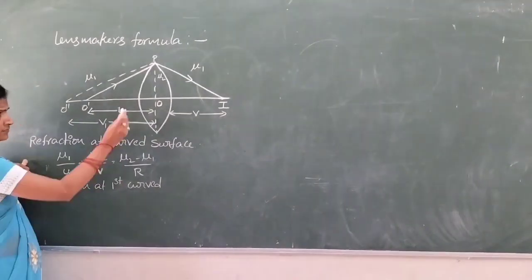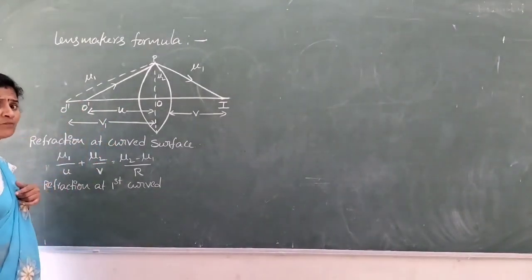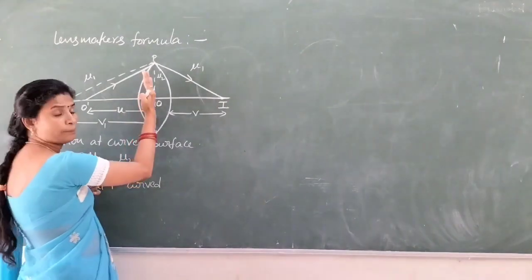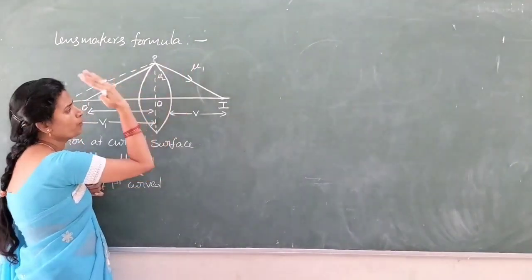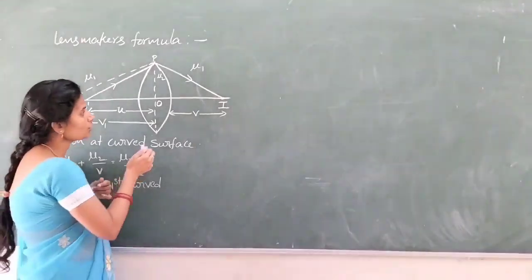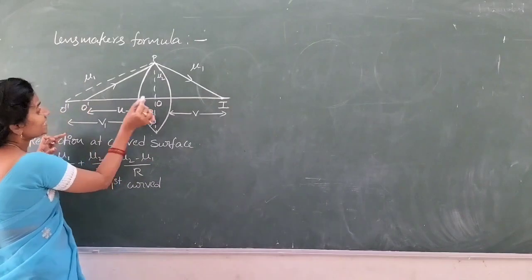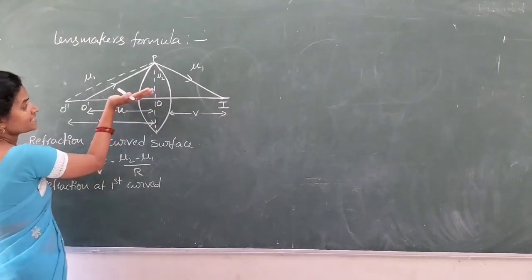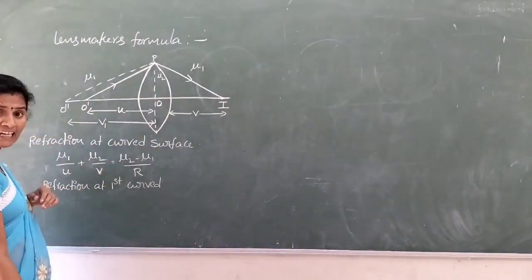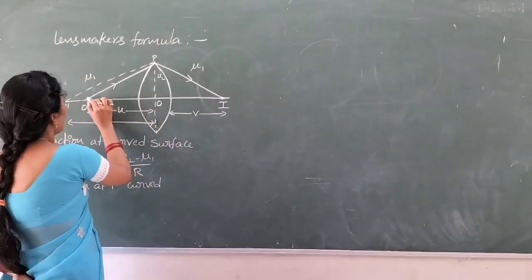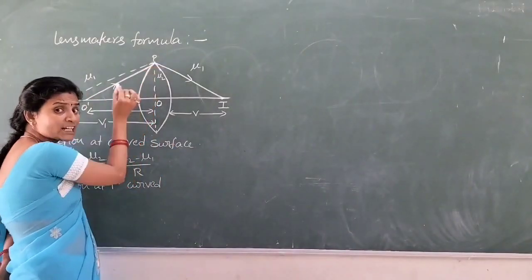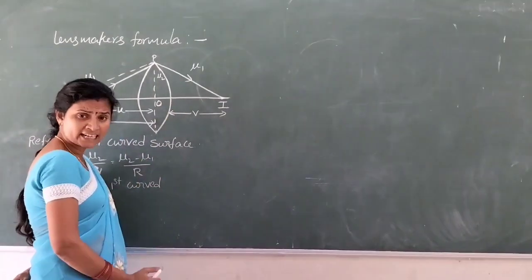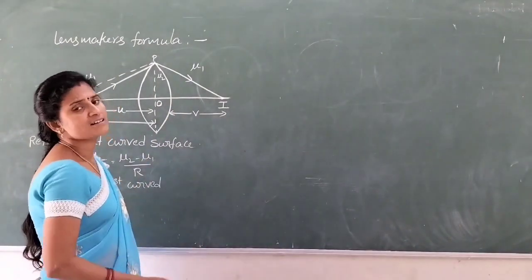According to sign conventions: all distances are measured from the pole or optic center. Distances above the principal axis are taken as positive, and distances below the principal axis are taken as negative. The direction of the incident ray is taken as positive, and the direction opposite to the incident ray is taken as negative.